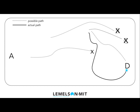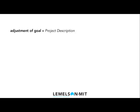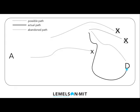You look back at your journey and reflect on all that you learned. The next time you explore a new land, you'll be better prepared for the journey. Consider that there were adjustments to both the goal and to the path. An adjustment of the goal is a change to the project description. An adjustment to the path is a change in how the invention ends up being built. Keep this illustration in mind for the remainder of the module.